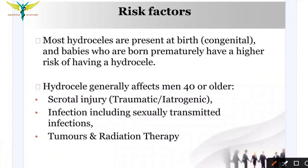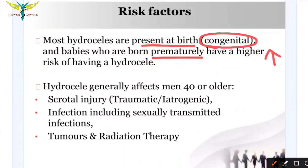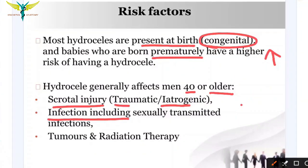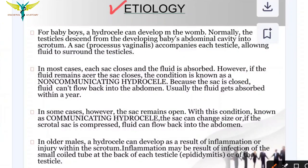Most hydroceles are present during birth — that is, congenital hydrocele — and babies born prematurely have a higher risk. Hydrocele is most common in men around age 40 or older. In adults it is mainly caused by scrotal injury (trauma), iatrogenic causes (treatment-induced), infections especially STIs, tumors, or radiation therapy.